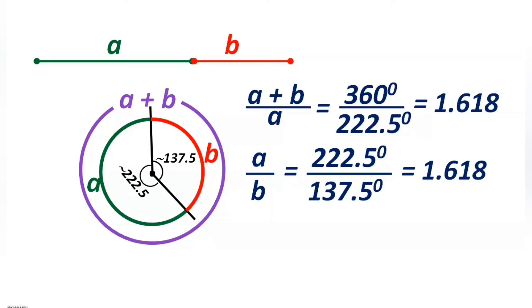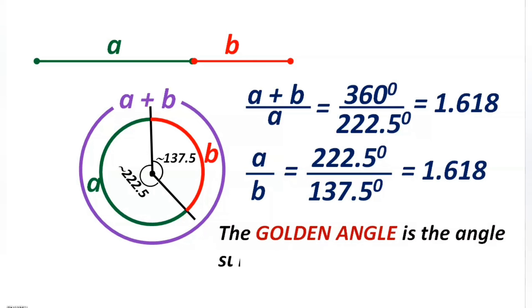Now we got a doubt, what is the golden angle? We are discussing about a golden angle. The golden angle is the angle subtended by the smaller arc of length b at the center, which is 137.5 degrees.